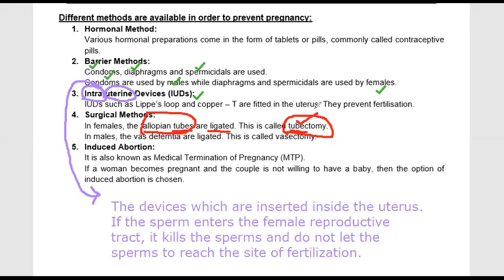This method can be opted by couples who have already had children and do not want more. They can opt for the surgical method as a permanent solution so that they are not concerned about unwanted pregnancy. The equivalent procedure in males is called vasectomy — the vasa deferentia are cut. Sperm will still be produced but will not reach the penis. This is a permanent surgical method to prevent pregnancy.